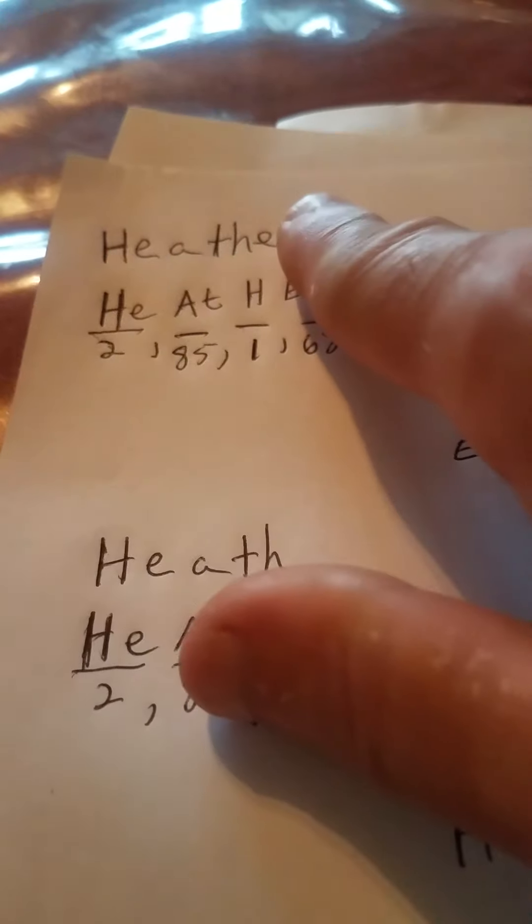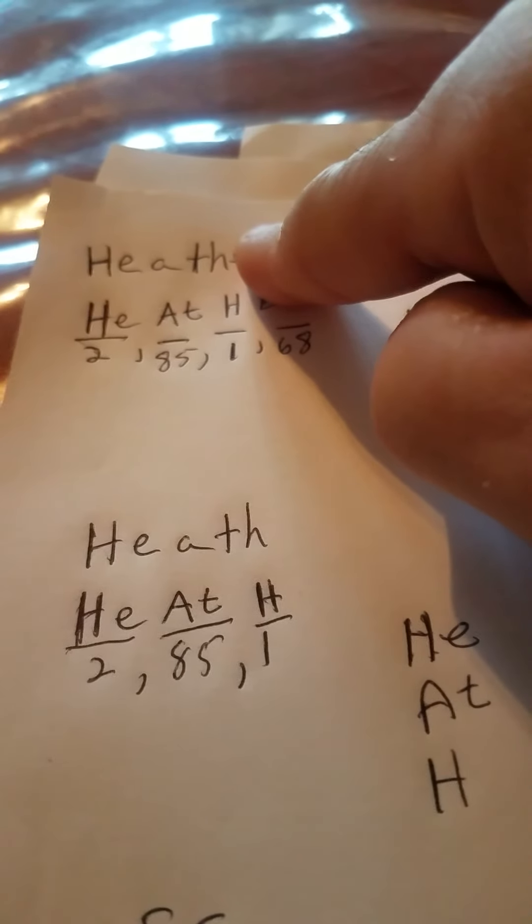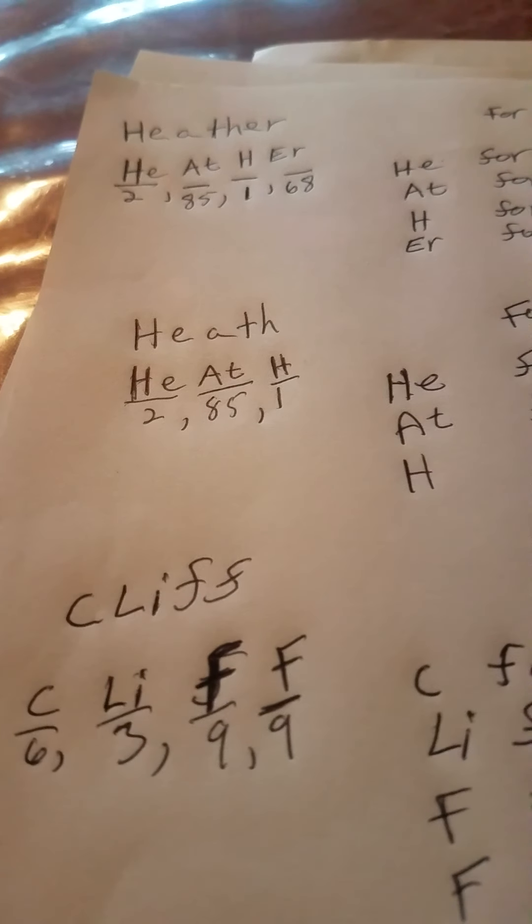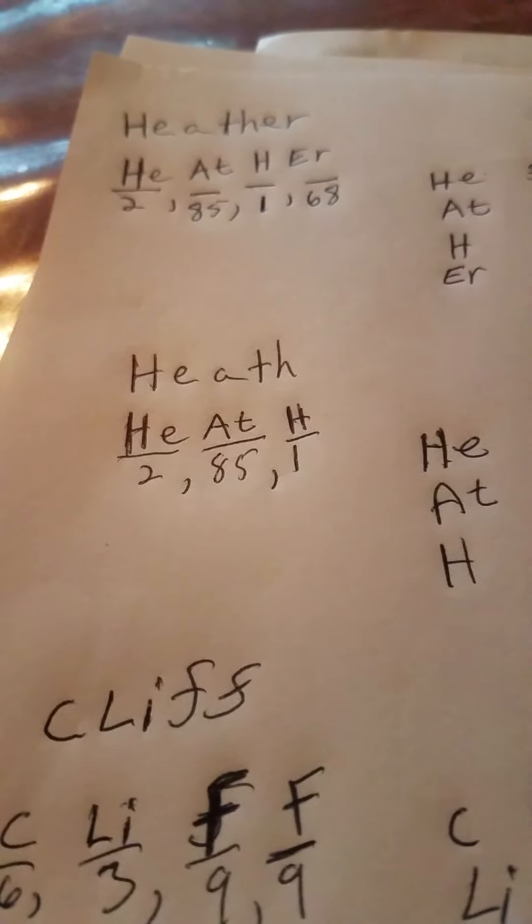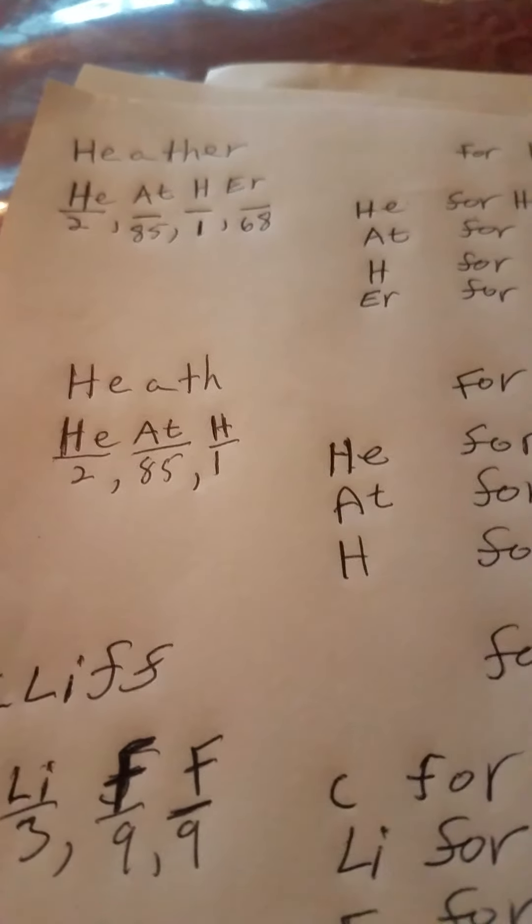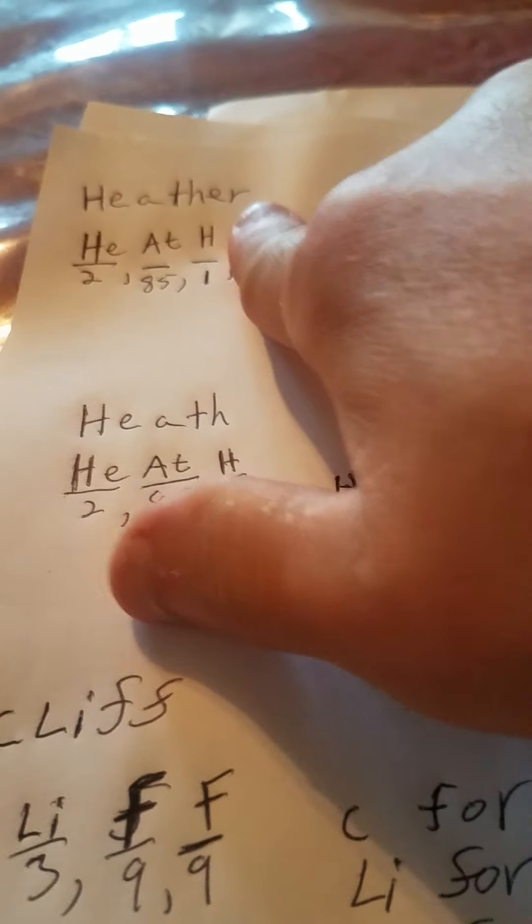Now, if you take out the E-R, see my finger? I'm going to block the E-R. And you got Heath. Now, Heath is a name. Anybody knows that? Even a candy bar, Heath bar. But there are people named Heath. Heath, Keith, whatever. And you take out the E-R, which is erbium, and you got the same number here.